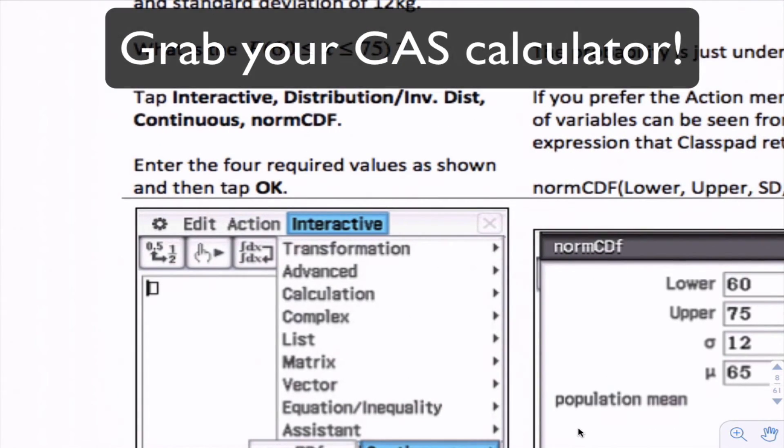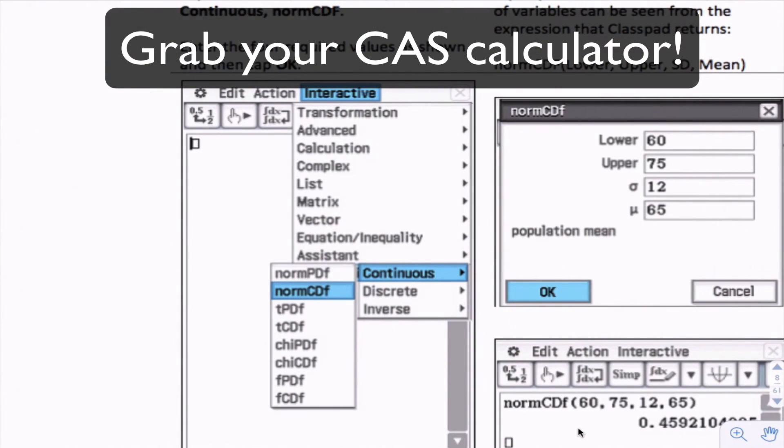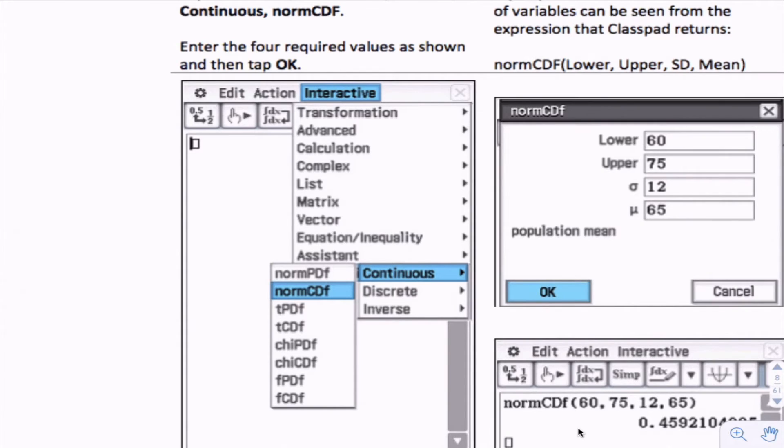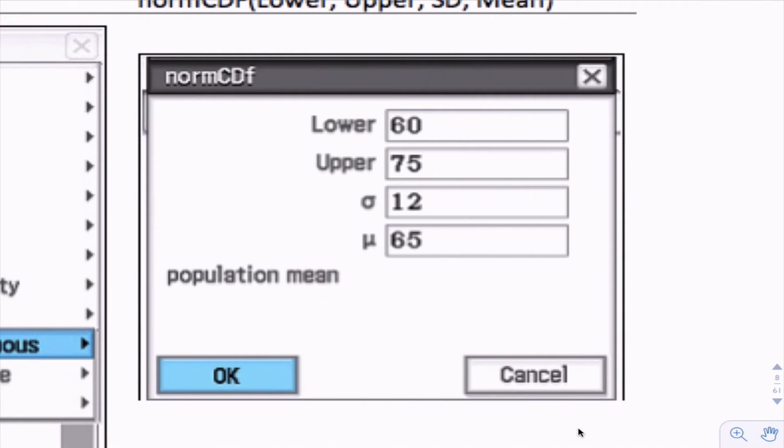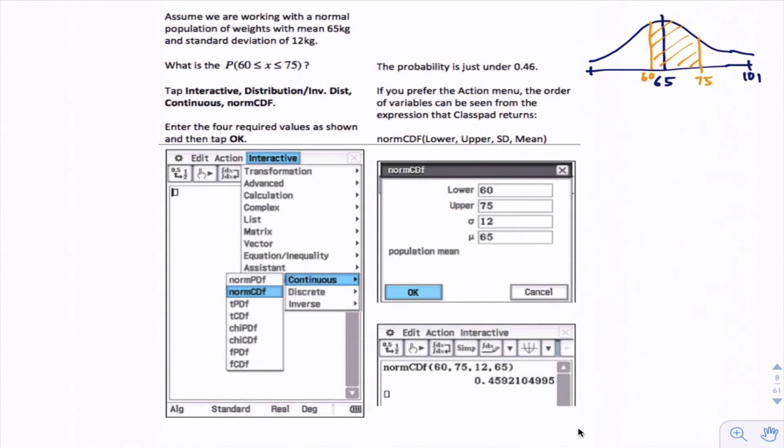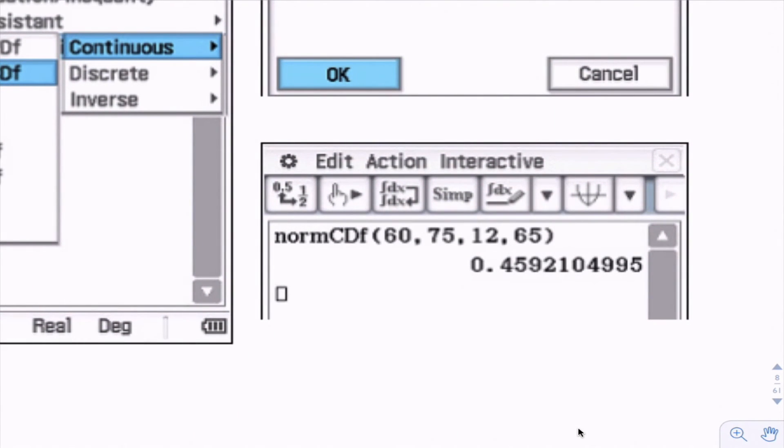On our calculator, the way that we do it is in main, we go interactive, continuous, and normCDF. Get your calculator out so you can get the same answer to make sure you can get the right values in there. So interactive, continuous, normCDF, then you get this menu here. You need to put in the lower value we want, which is 60, the upper value 75, then the standard deviation 12, and lastly the mean 65. Click OK, and it gives us the answer of 0.459210.